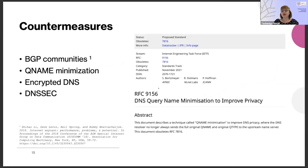Considering countermeasures: one proposal is that when announcing anycast prefixes, operators could include geographical hints so destination networks choose nearby anycast instances. A second proposal is QNAME minimization — in the Mexico case, it wasn't strictly necessary to send the full request to the root server; just .net would have been sufficient. One can also use encrypted DNS to prevent sniffing of DNS traffic, though it is not yet widely deployed between recursive resolvers and authoritative name servers. Finally, DNSSEC could help, but it requires recursive resolvers to perform DNSSEC validation and domain names to be signed.